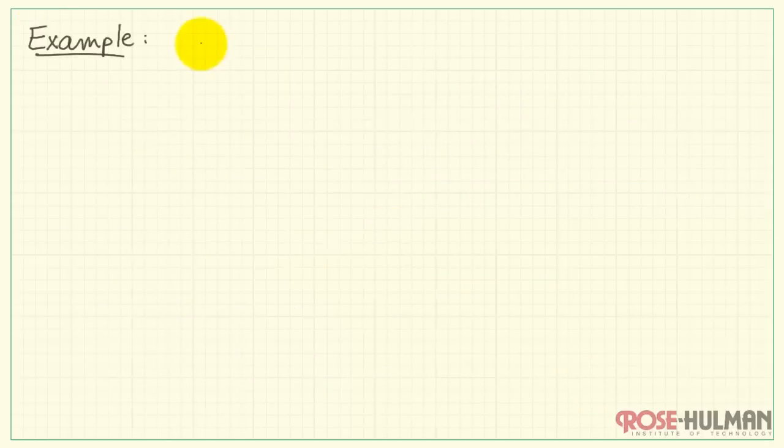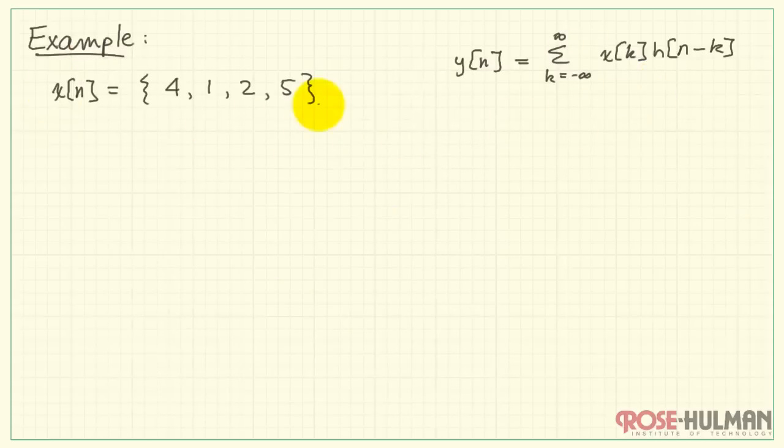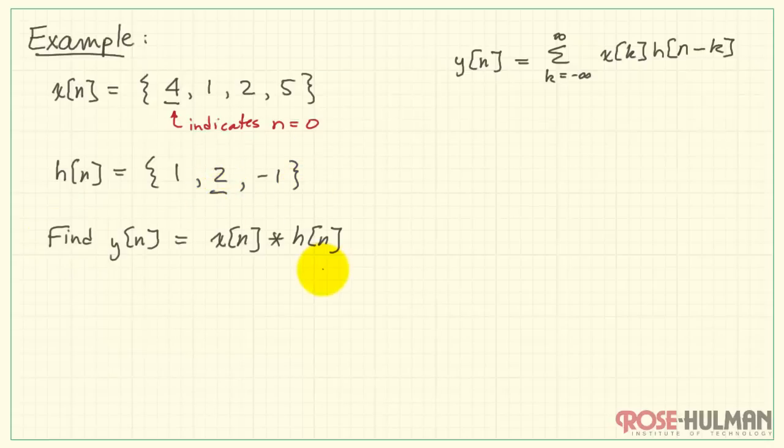Here's my convolution sum for reference purposes. Let me write down x of n equals a particular sequence. I'm placing an underline to indicate the n equals 0 value. Here's another sequence for my impulse response. And I'll place its n equals 0 value in the center. We want to find y of n is the convolution of x and h.